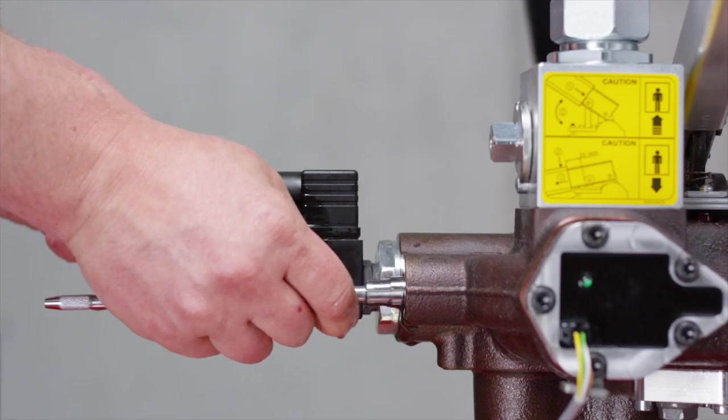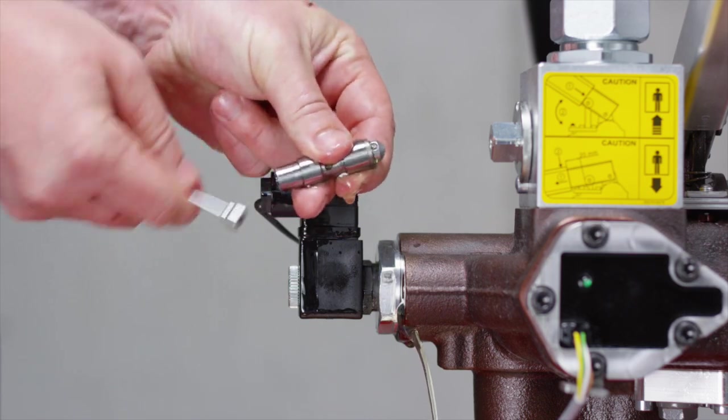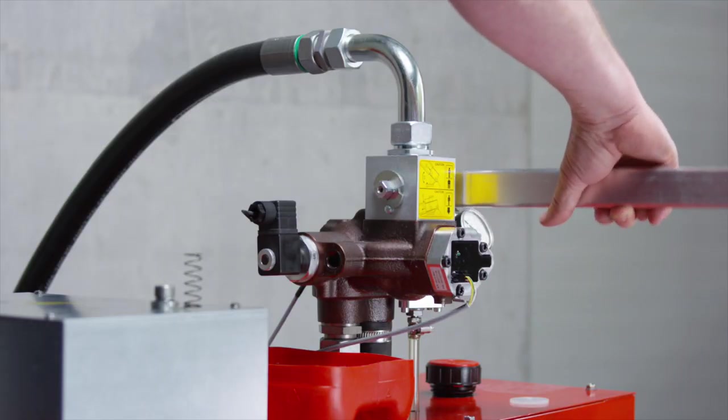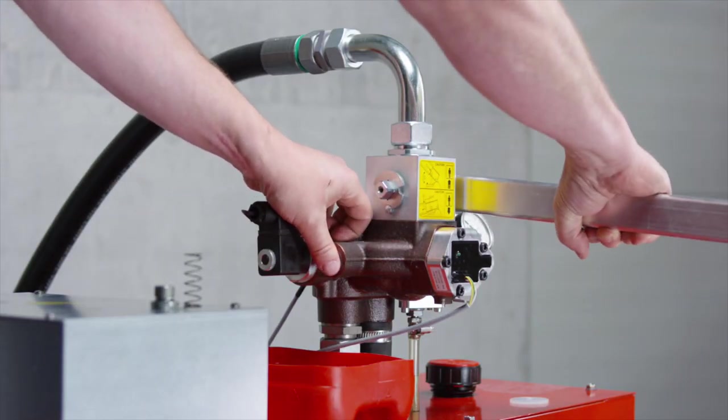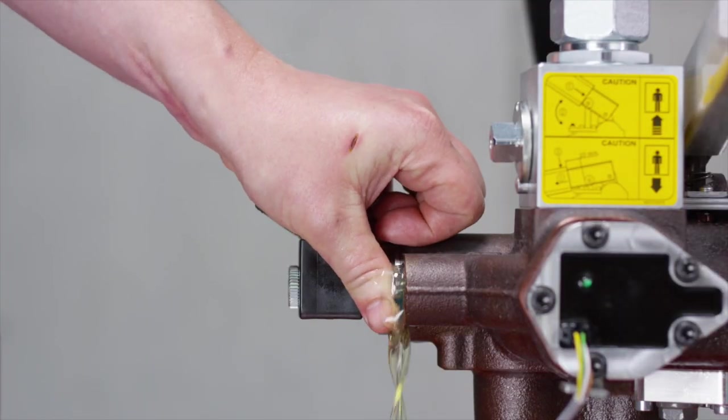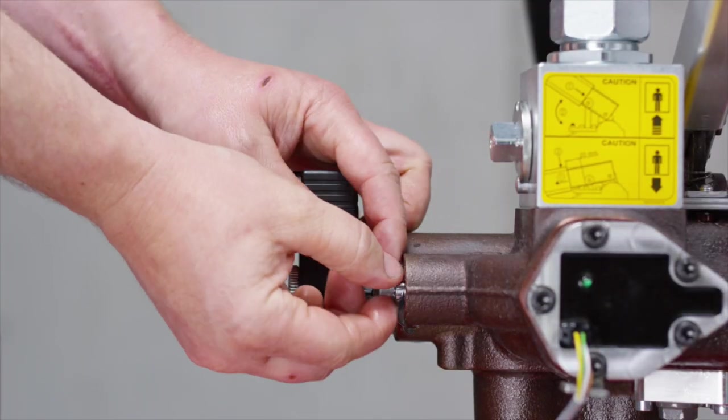Pull out the directional valve with a rod magnet. If no rod magnet is available, slowly operate the hand pump until the directional valve is forced out of the bore.